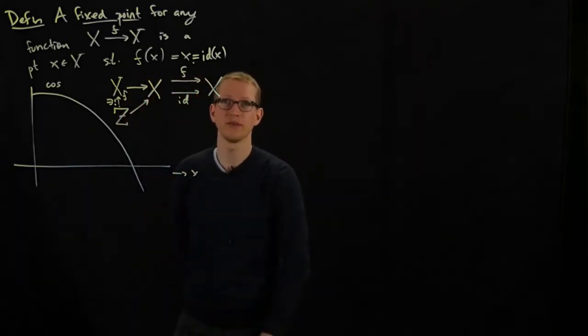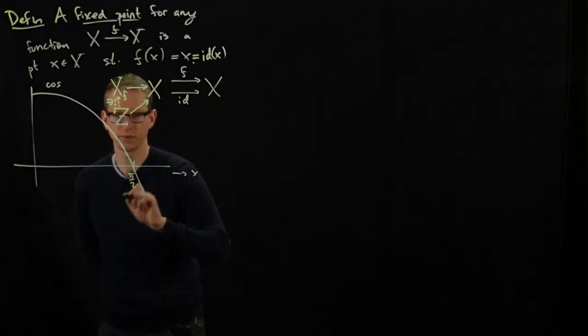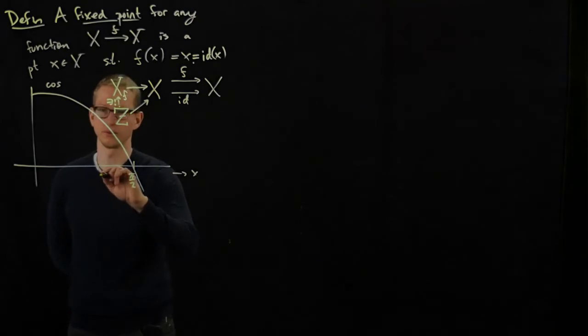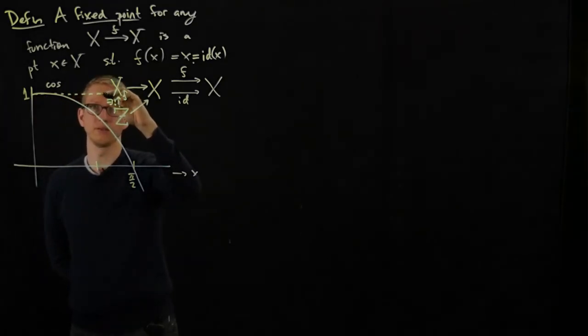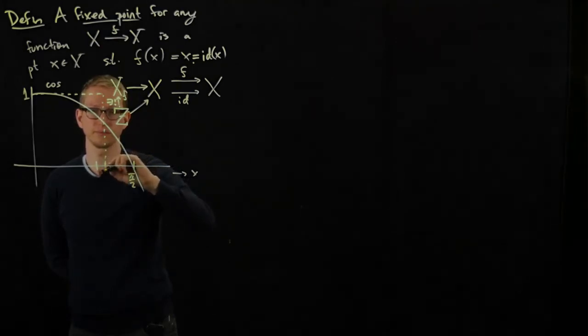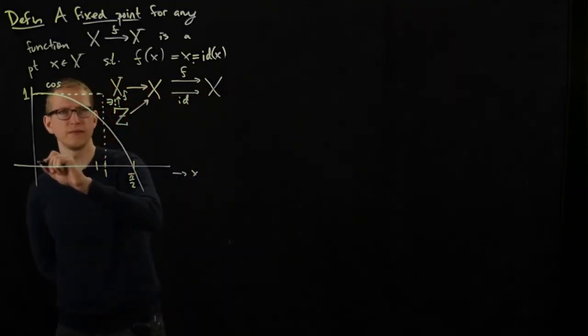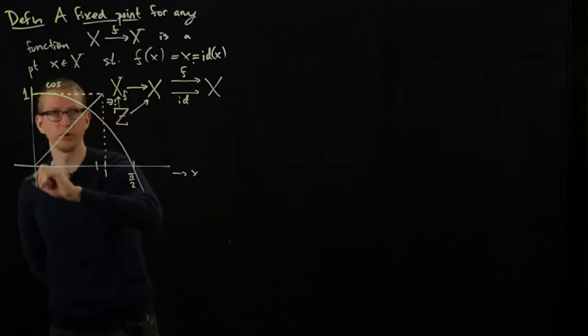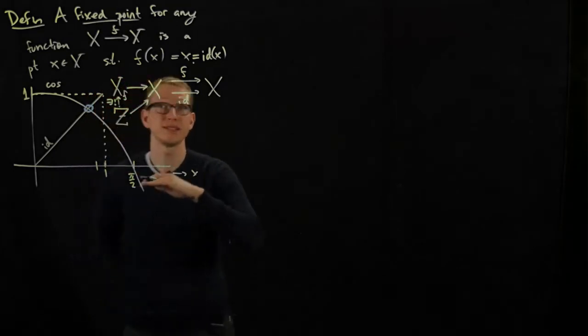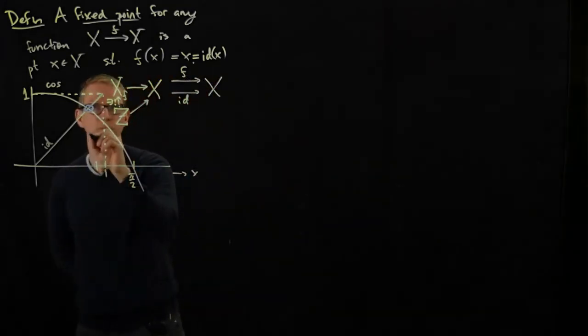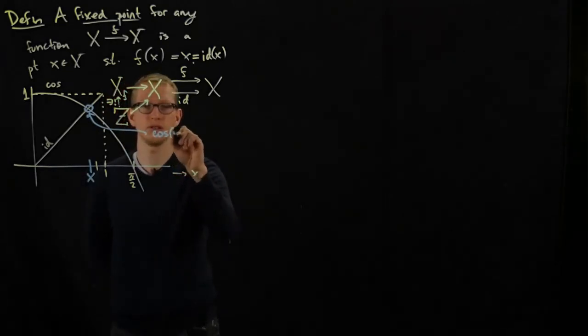Whether or not that's true, it won't affect anything that follows. So let's look at the identity function. Let's just write this out. This is pi over 2. Let's say 1 is somewhere here. Here's 1. And if I drew this somewhat to scale, then 1 should be approximately here. This will help me draw the identity function, which is just the straight line through these two points. This is the identity function. And if you notice from this picture, there's exactly a unique fixed point. The fixed point is exactly where these two graphs intersect. So this is the point here, let's call this x.